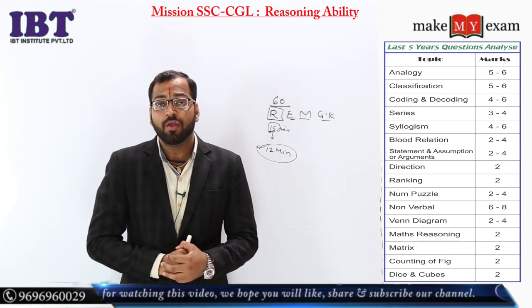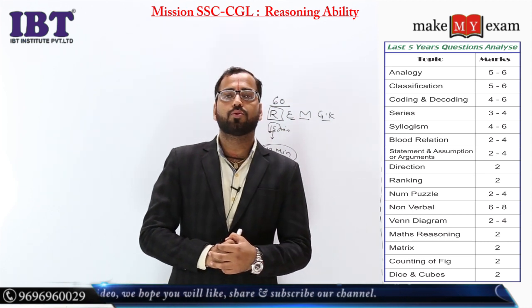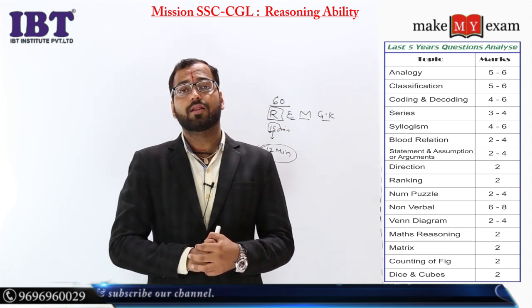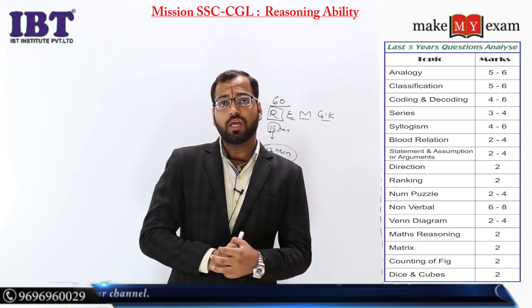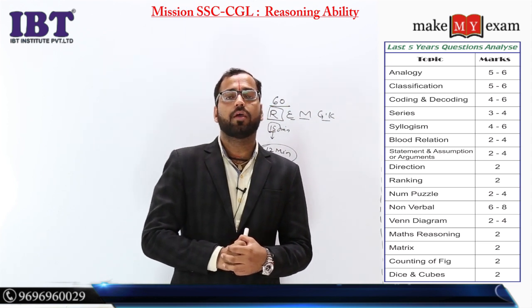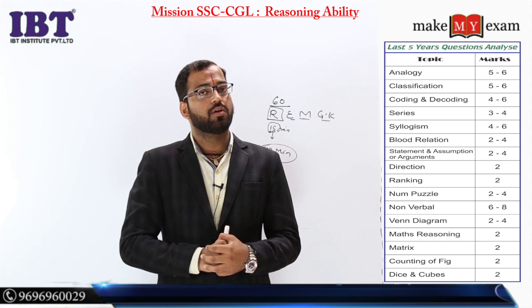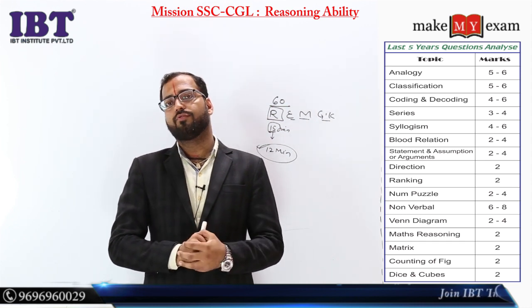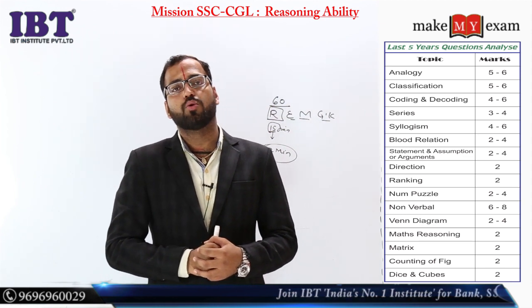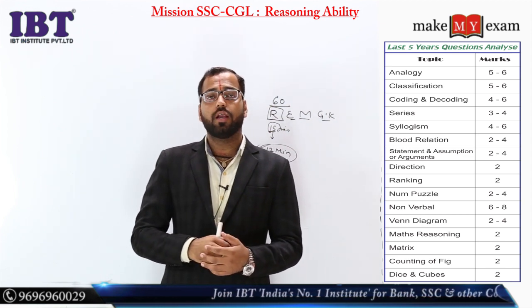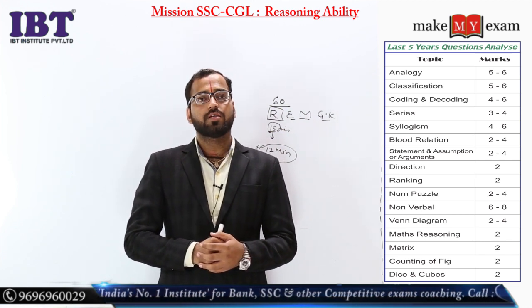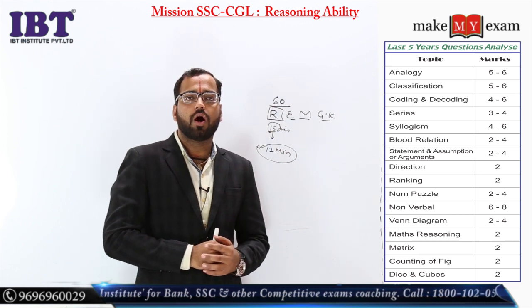Non-verbal exam में 6 से 8 marks के लिए आएगा। Venn diagrams के 2 questions आते हैं - 4 marks के लिए। Blood relation के 1-2 questions - last CGL 2016 में 2 questions थे - 4 marks के लिए। Direction का 1 question - 2 marks के लिए। Ranking 1-2 marks के लिए काम करता है। Miscellaneous topics की ओर जाएंगे तो 2-4 marks के लिए।